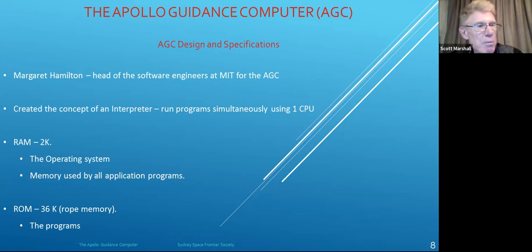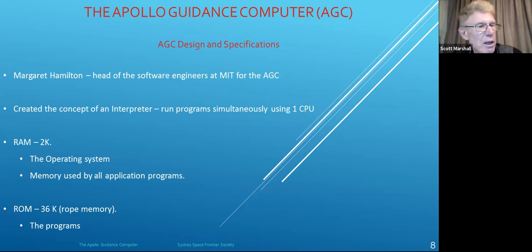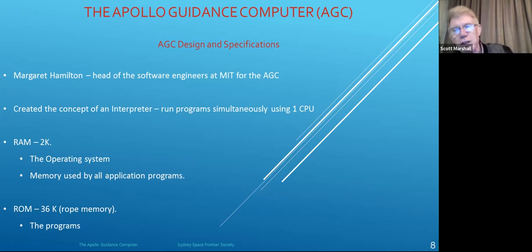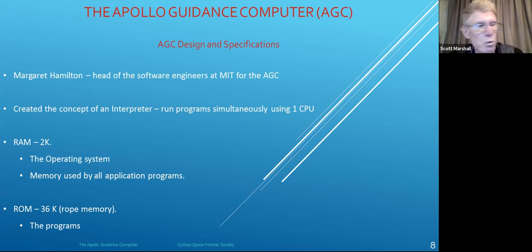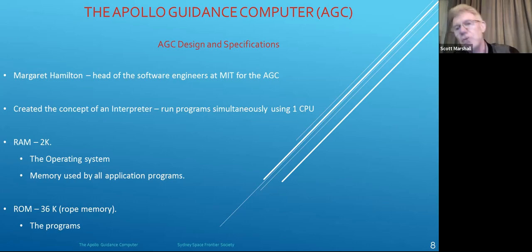2K of RAM — that's it. Software performing guidance and navigation tasks, including landing on the moon and lunar orbit rendezvous, was each allowed a whopping seven words — seven bytes, not seven kilobytes — of memory for temporary variables. When people compare a digital watch to the AGC in terms of power, the watch is not more capable. The AGC landed men on the moon within 500 to 600 feet of the target after travelling a quarter of a million miles from Earth, and landed at a velocity of less than one-tenth of a foot per second. Try getting your watch to do that.